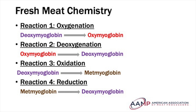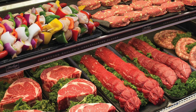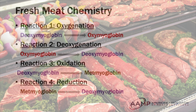There are seven main reactions we will discuss. Reaction one is called oxygenation, or bloom. This reaction converts deoxymyoglobin to oxymyoglobin. The addition of oxygen is not the same as oxidation. Consumers prefer the red-cherry color of oxymyoglobin and often discriminate against meat that is not this color.